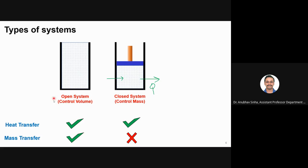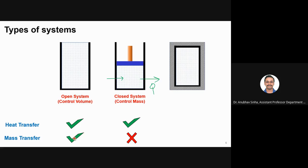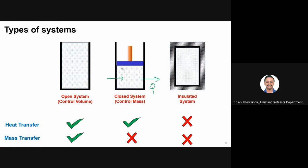If we say we don't want any heat or mass transfer, that is called an isolated system. We take a closed system and add insulation so there is no heat transfer. This system will have no heat transfer and no mass transfer.